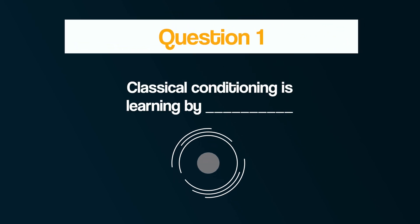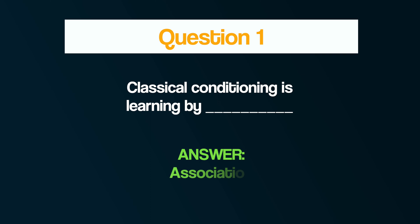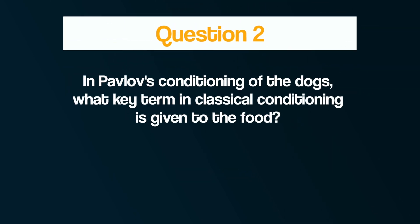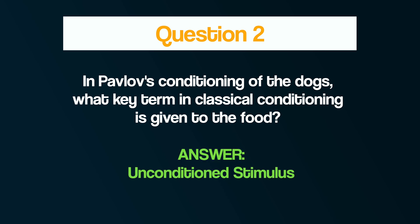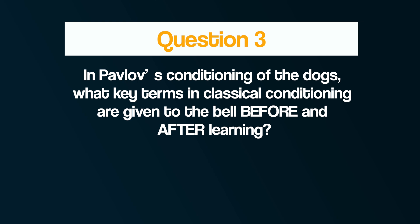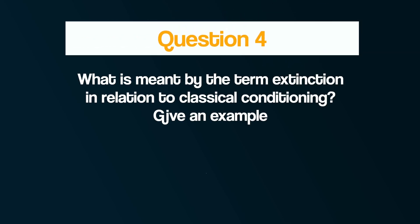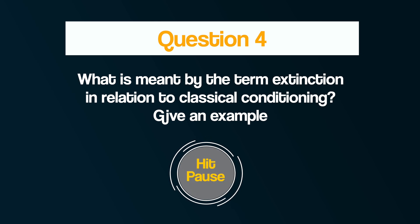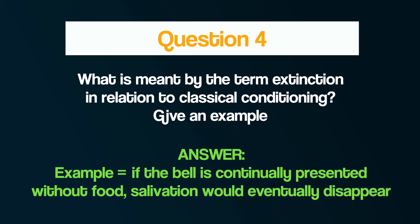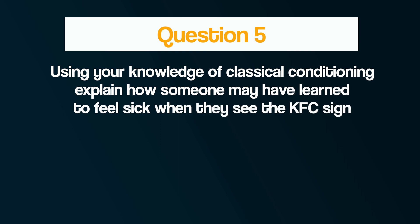Question one: Classical conditioning is learning by...? Question two: In Pavlov's conditioning of the dogs, what key term in classical conditioning is given to the food, and can you give an example? Question three and number five: Using your knowledge of classical conditioning, explain how someone may have learned to feel sick when they see the KFC sign.